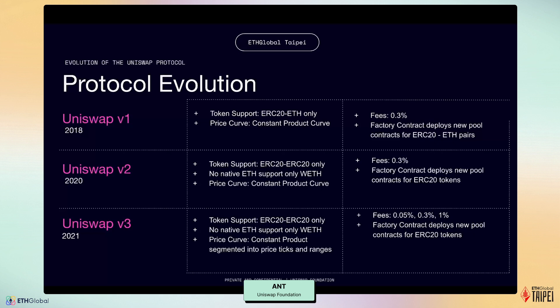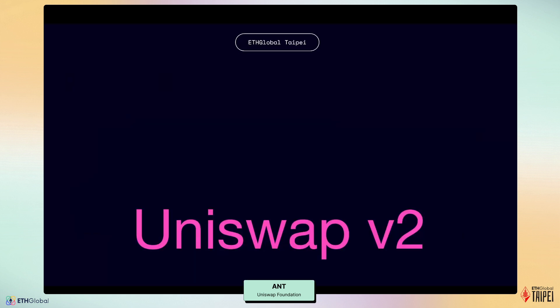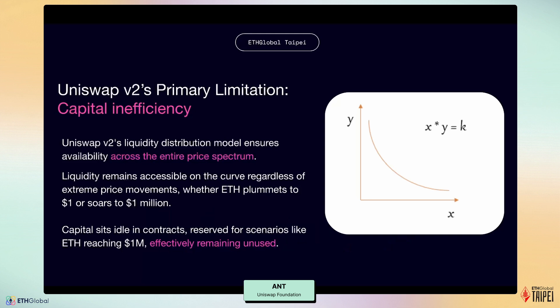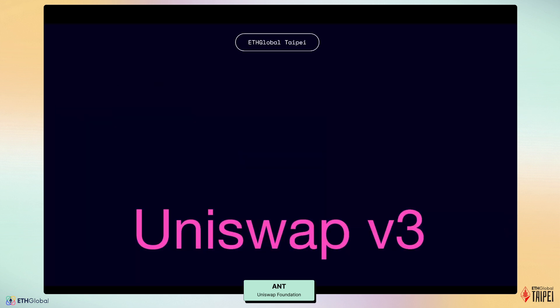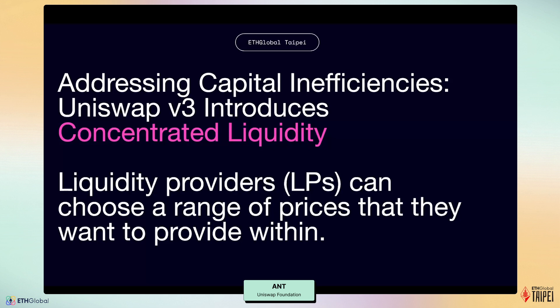Here is a brief comparison between different versions of Uniswap. We can see it introduced better token support and capital efficiency over time. Uniswap V2, released in 2020, was a major improvement over V1. It supported direct ERC20-to-ERC20 swaps and used a global constant product curve. It had a fixed fee structure of 0.3% and used a factory contract to deploy pair contracts for any two ERC20 tokens. However, it didn't support on-chain programmability. Uniswap V3, released in 2021, introduced concentrated liquidity with its price curve segmented into price ticks and ranges, allowing for more capital efficiency.